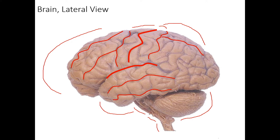Now let's move back into the parietal cortex. The parietal cortex only has one primary sulcus. The intraparietal sulcus, as it's called, divides the parietal cortex up into a superior parietal lobule above it and an inferior parietal lobule below it. The inferior parietal lobule is further subdivided into a supramarginal gyrus and an angular gyrus.